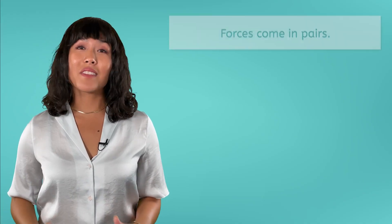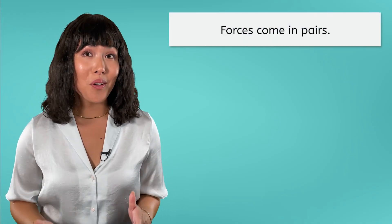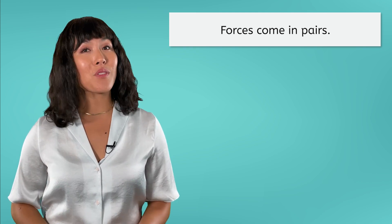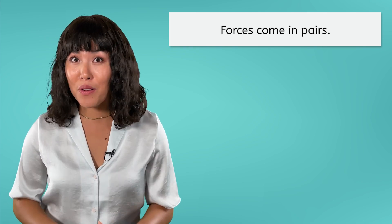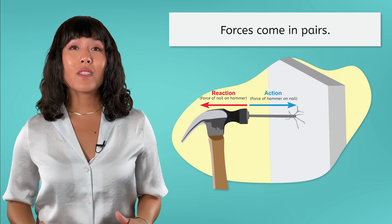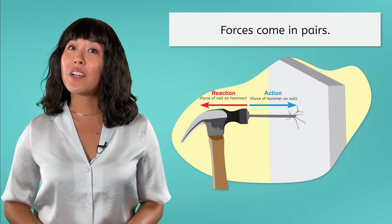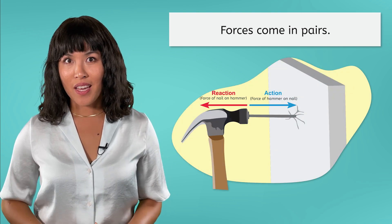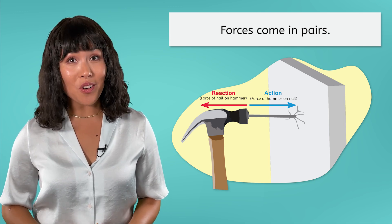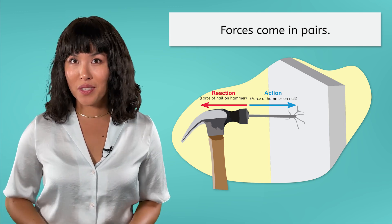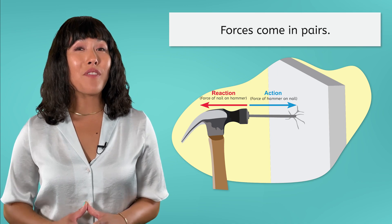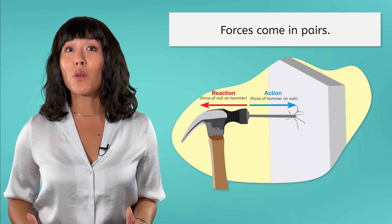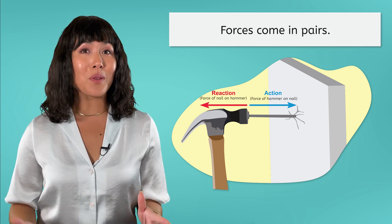Newton's third law tells us that forces come in pairs. Every object that exerts a force gets that same amount of force back. The force initially exerted is typically called the action force, and the force that is exerted in return is called the reaction force. Let's see if you can identify the reaction force that would result from an action force, with a few examples.